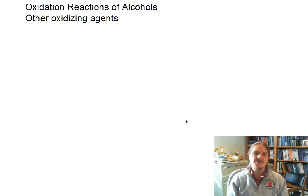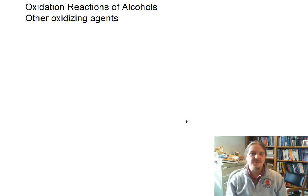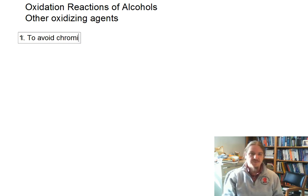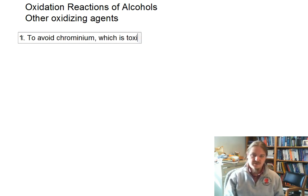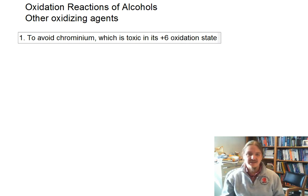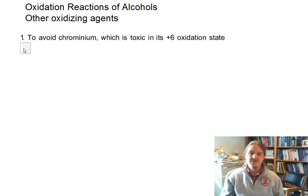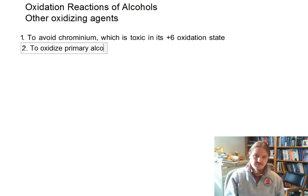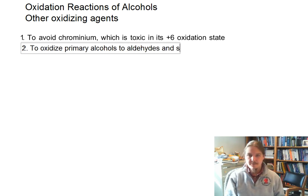Hello. In this video, I'm going to briefly introduce you to some other oxidizing agents that are used to oxidize alcohols. The oxidizing agents on this list are things that have been developed for a number of purposes. One central theme is to avoid chromium, which is toxic in its +6 oxidation state — and it's that +6 oxidation state in which all of the chromium-based oxidizing agents operate.